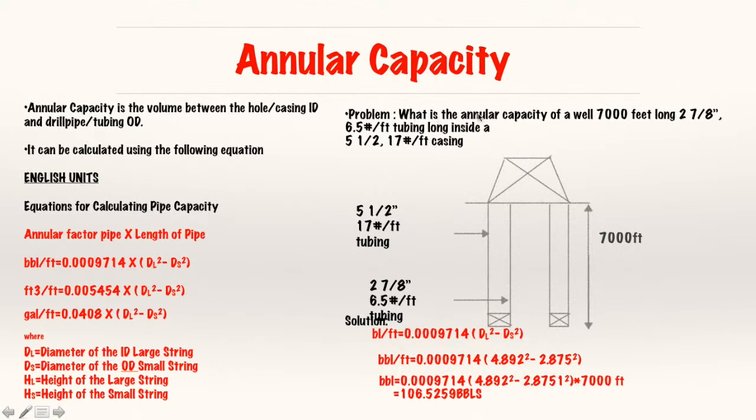So, let's just use this example to clarify that. What is the annular volume of a well of 7,000 feet long, 2 7/8 inches, 6.5 pounds per foot tubing, inside a 5.5, 17 pounds per foot casing? So, basically, I just use my barrel per foot factor. I plug in my number. Remember, always ID for the large string and OD for the small string. Right? So, I subtract that and I multiply it by 7,000. That gives me my answer, 106.525 barrels. You know, pretty straightforward. Always take, always remember, OD small string, ID large string, just like what we discussed for the annular volume in video 2. It's the same thing. So, just plug those in and you'll get your answer, multiply by 7,000. Always remember to multiply by the height to get your barrels, how much volume, unless you just be left with your factor.